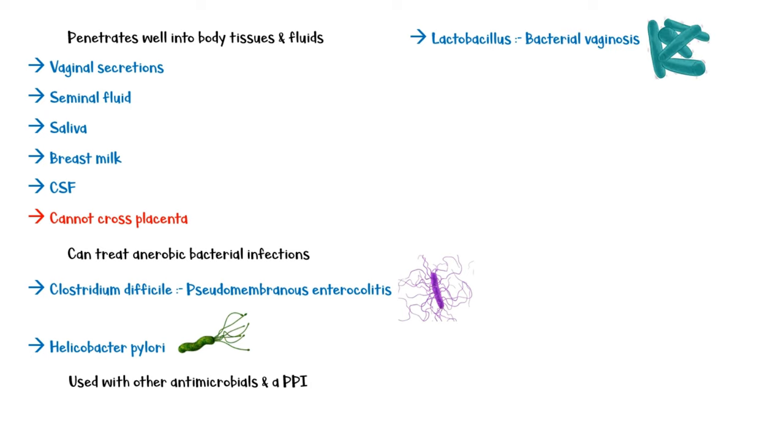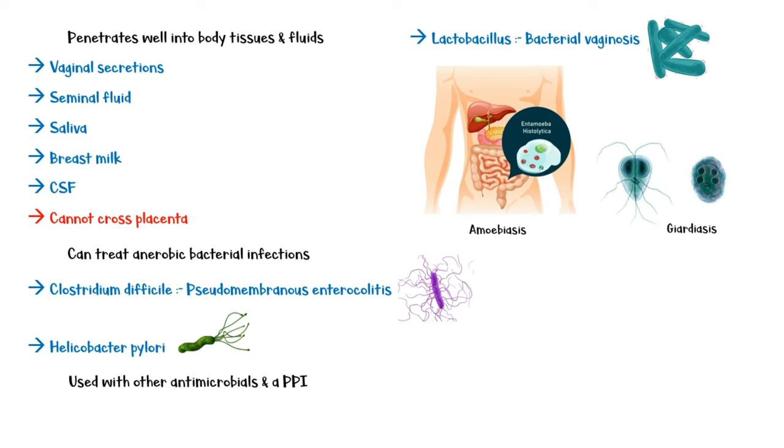Lactobacillus that causes bacterial vaginosis can also be treated with metronidazole. For protozoal infections, it is the medication of choice for amebiasis and is used in the treatment of giardiasis. Moreover, metronidazole is very effective against Trichomonas vaginalis, which causes vaginosis.